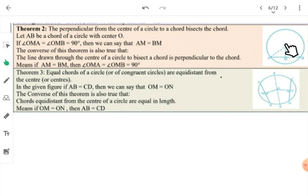If you have a chord AB and you draw a perpendicular from center O, then angle OMA is 90 and OMB is 90, both will be 90. Then we can say AM equal to BM, meaning the chord is bisected. The converse is also correct. If a line is drawn from the center to bisect a chord, it will be perpendicular.